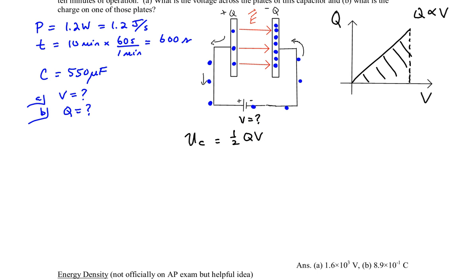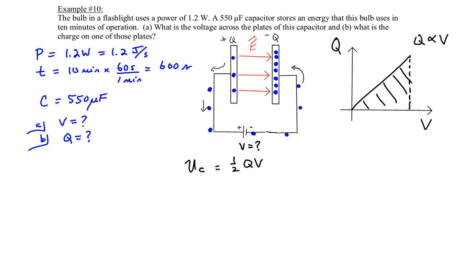We know in this problem that we want the flashlight to operate for 10 minutes and it uses 1.2 joules per second. If you know the energy per second and the time that you have, then you should be able to calculate the total energy needed.